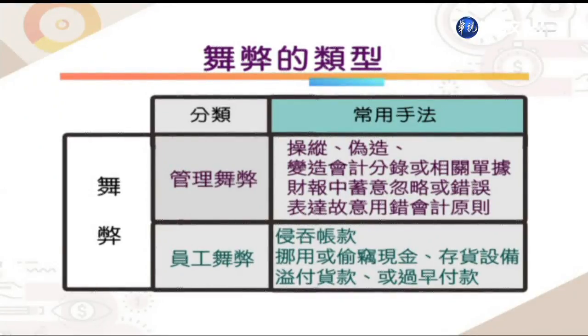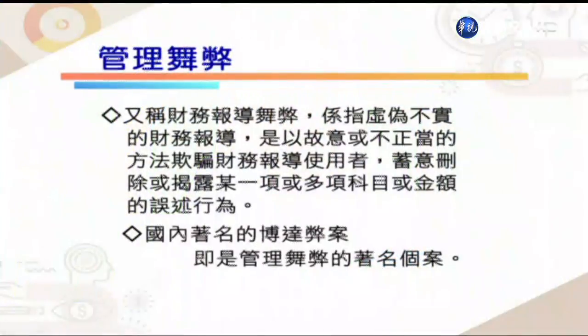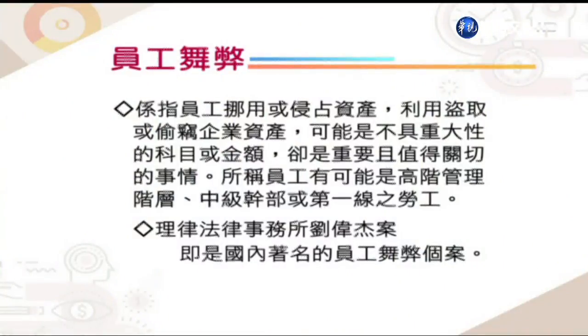员工舞弊是指员工侵占公司资产，利用窃取企业资产，可能金额起初不大，但却重要且值得关切，所称员工可能是高阶管理阶层、中级干部或第一线员工。管理舞弊的著名案例包括国内的博达案、立霸案以及国外的恩隆案；员工舞弊最著名的案例则是理律法律事务所刘伟杰窃取35亿资金潜逃海外。